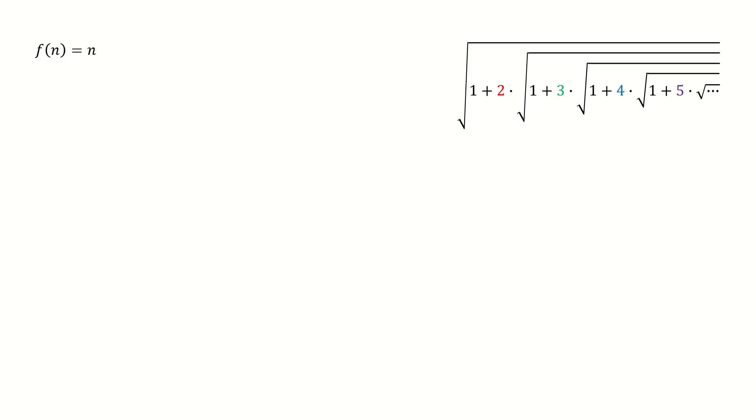First, we define the function f(n) equals n. We know n squared can be written into this form. Then we take the square root on both sides. Now we plug in to replace n. And we got here.